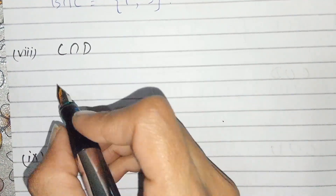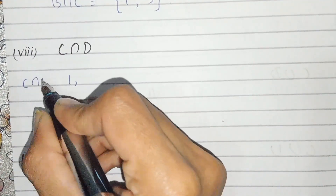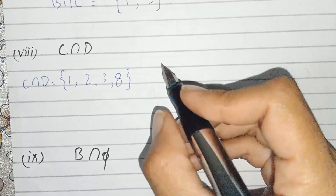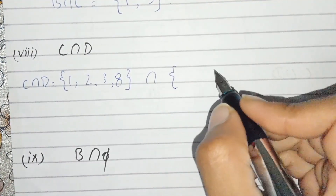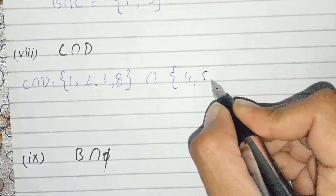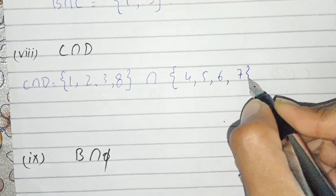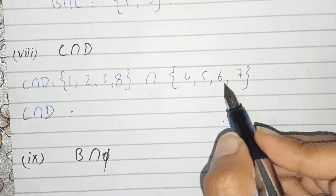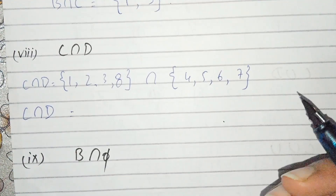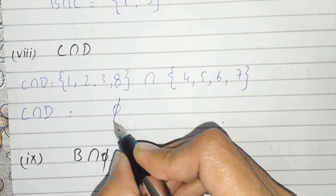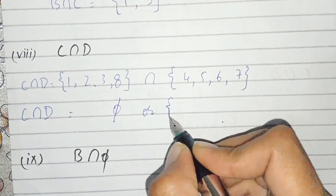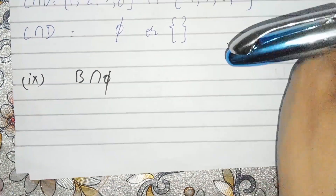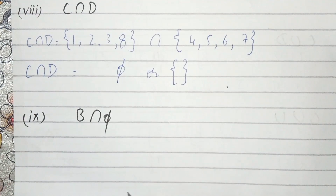Part number eight: C intersection D. C is {1,2,3,8} and D is {4,5,6,7}. We take the common values and there is nothing common in both sets, so we write the empty set. Both symbols represent the empty set.